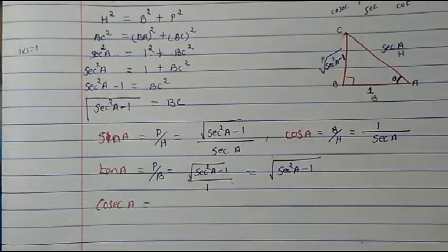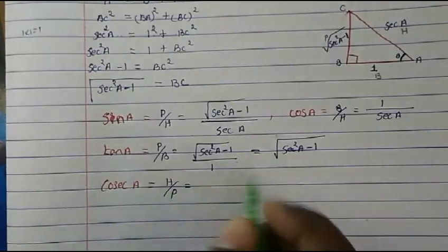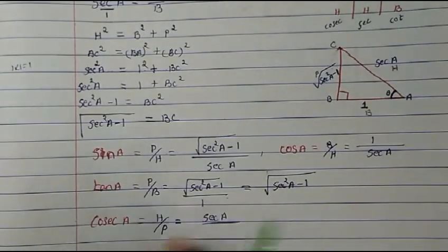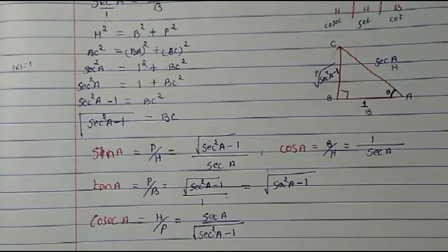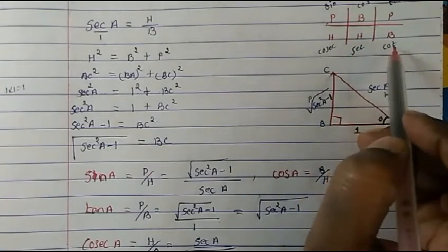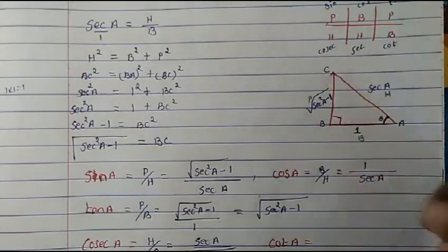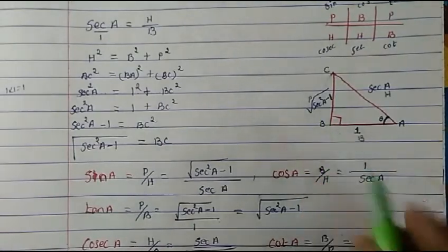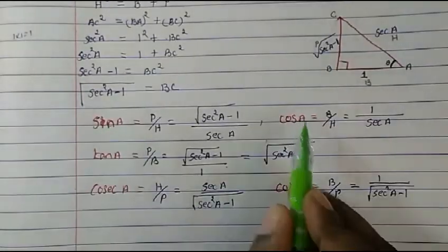Next, cosec A: cosecant is hypotenuse upon perpendicular. Hypotenuse is sec A and perpendicular is √(sec²A − 1), so cosec A = sec A / √(sec²A − 1). We skip sec since we are expressing everything in terms of sec. Finally, cot A: cotangent is base upon perpendicular. Base is 1 and perpendicular is √(sec²A − 1), so cot A = 1 / √(sec²A − 1).